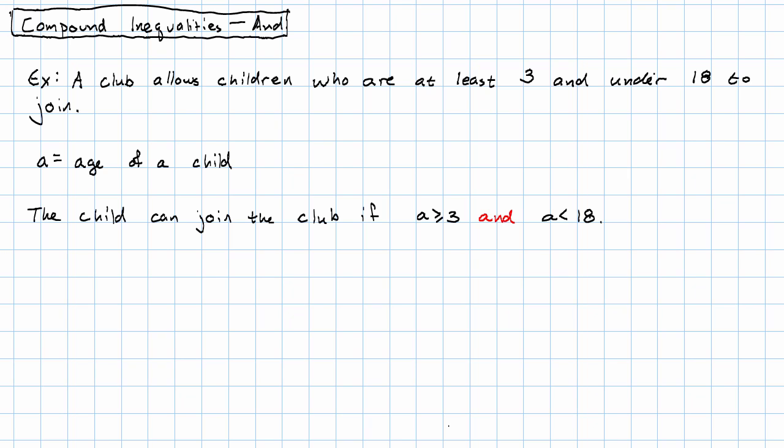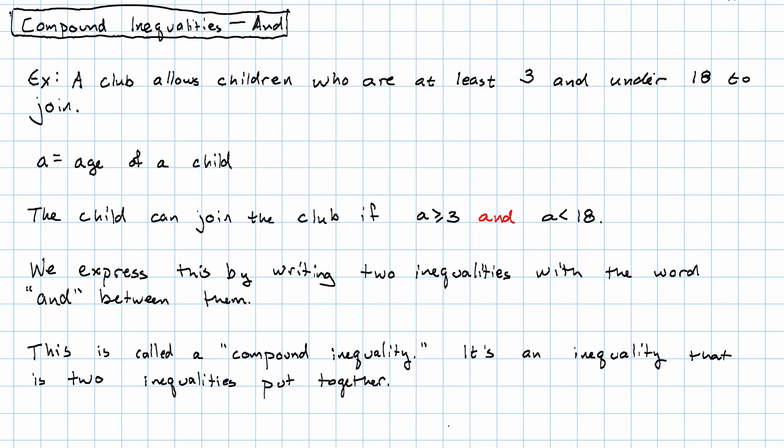And that's how we would express this restriction. We write two inequalities with the word and between them. This is called a compound inequality. It's an inequality that is two inequalities put together. In this case, the two inequalities are put together with the word and. The word and means both inequalities must be true, just like it does in everyday English.